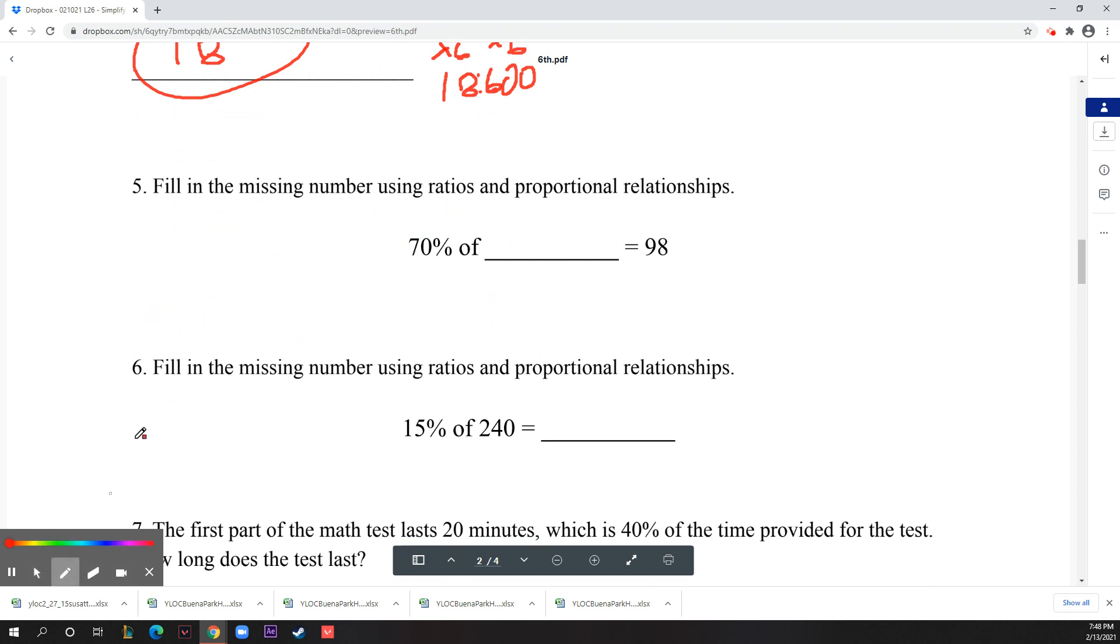Number five: fill in the missing number using ratios and proportional relationships. 70 percent, or 70 over 100, of x is equal to 98. If it says 'of,' then it goes at the bottom, and if it says 'is,' then it goes at the top. That's just a rule of thumb you should remember when doing proportional relationships like this. First thing you want to do is divide by 10, so you get 7 over 10 equals 98, then divide by 7 here to get 1:14. So 7 times 14 equals 98, then cross multiply - x equals 140. So 70% of 140 equals 98.